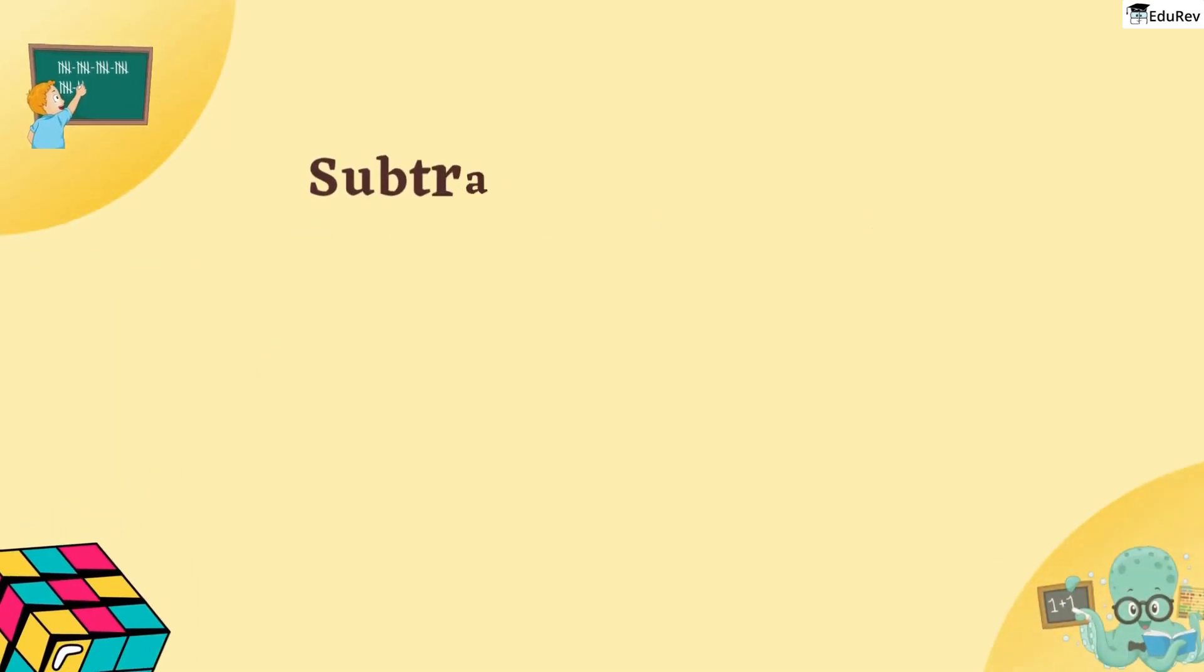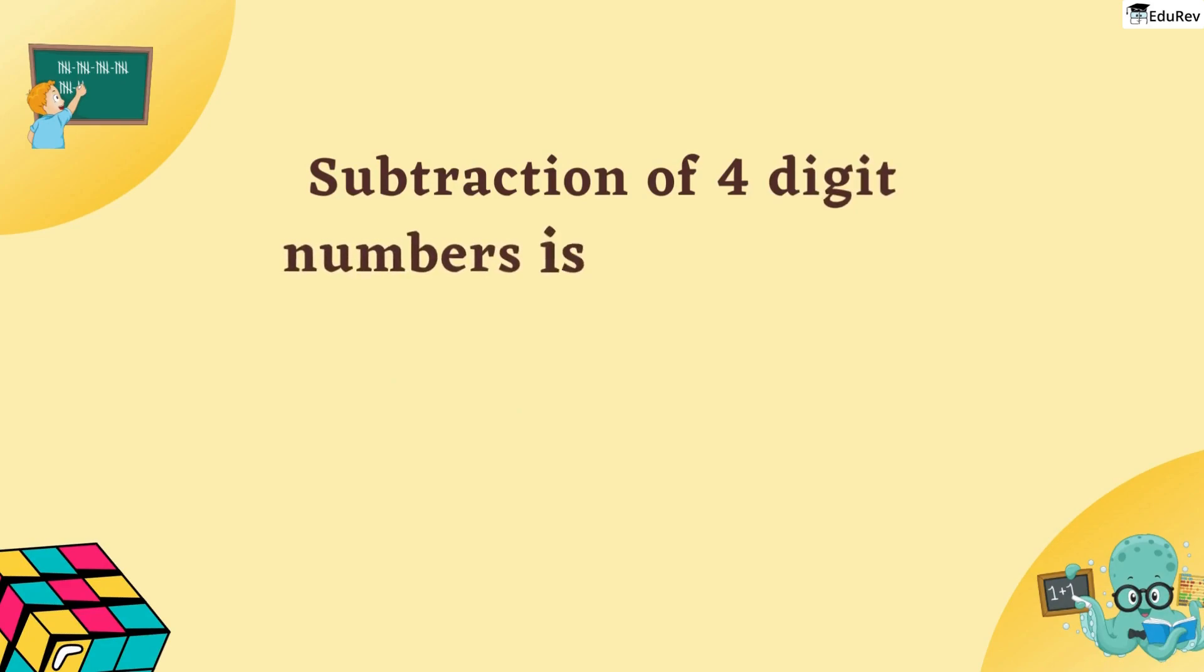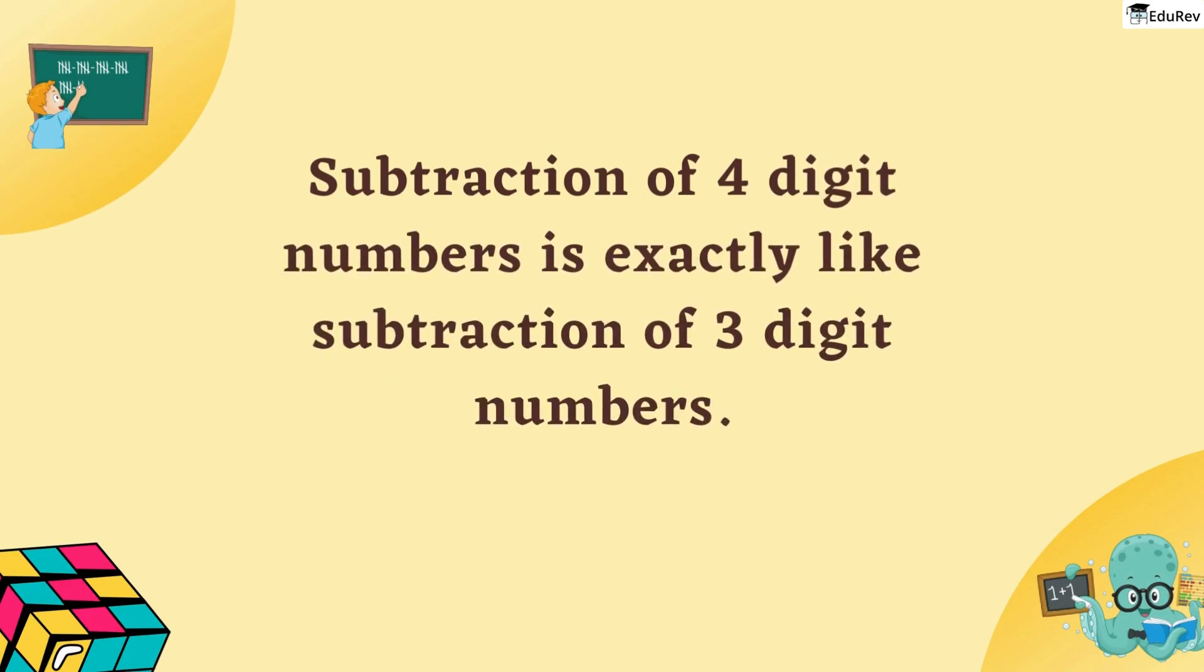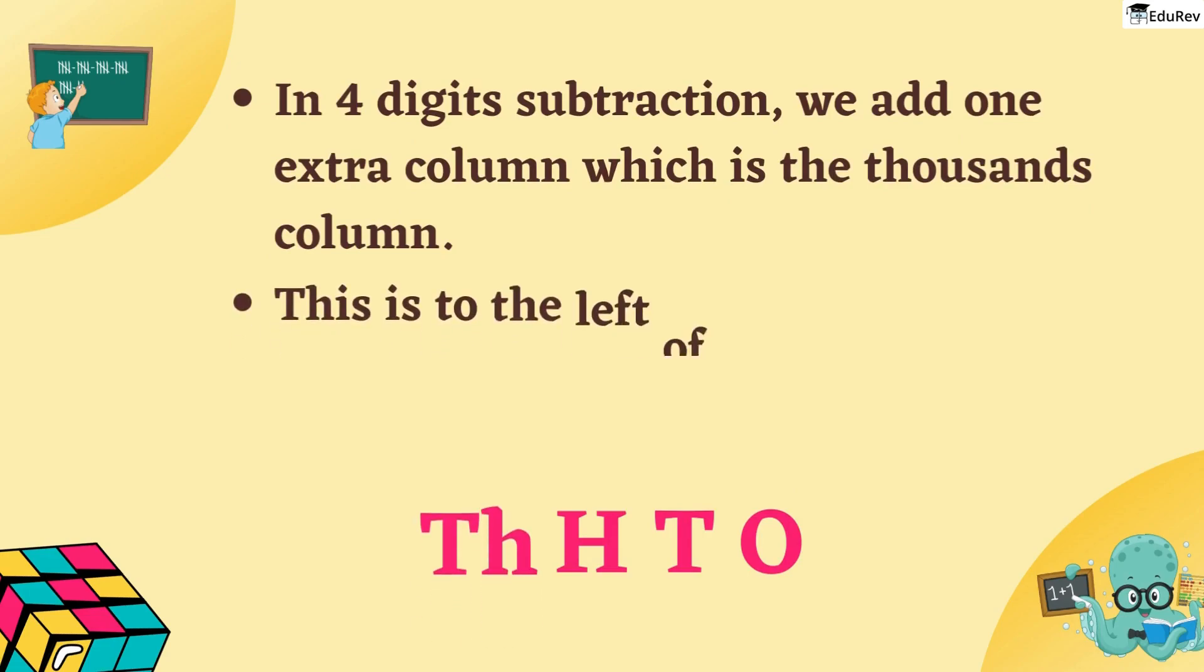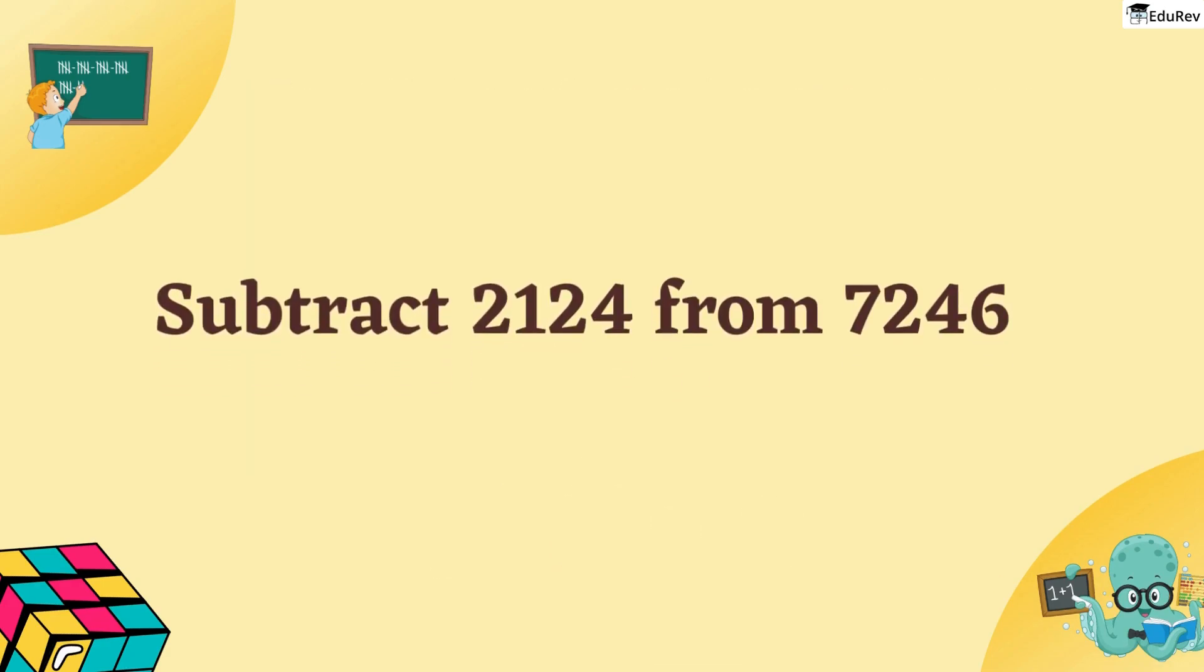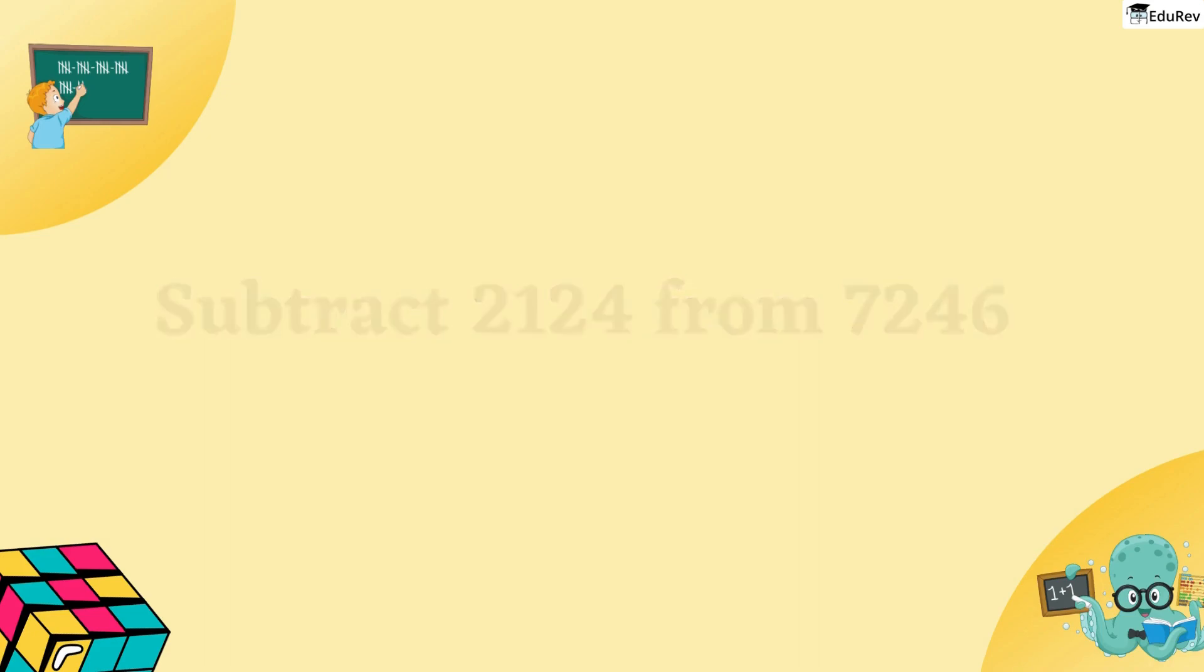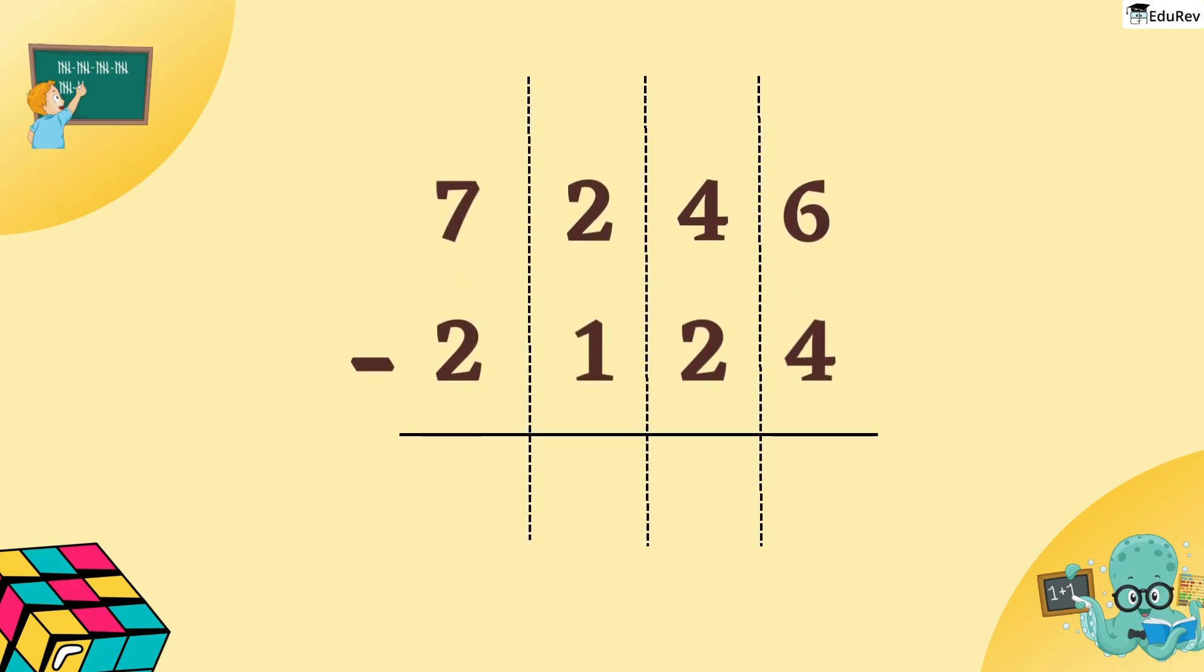Pay attention students. Subtraction of 4 digit numbers is exactly like subtraction of 3 digit numbers. It's just that in 4 digits, we add 1 extra column which is the 1000s column. This is to the left of 100s column. Now, we need to subtract 2124 from 7246.